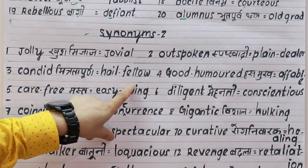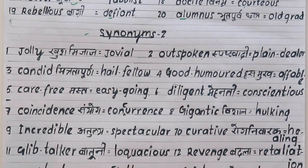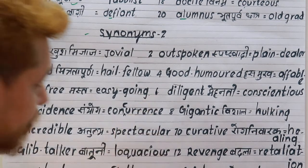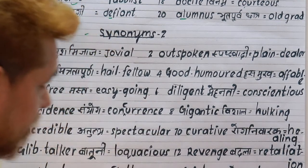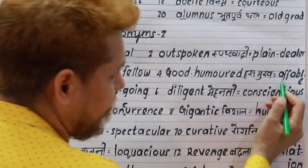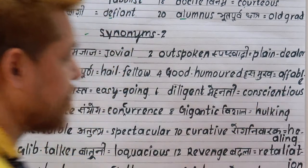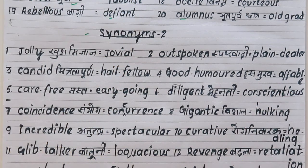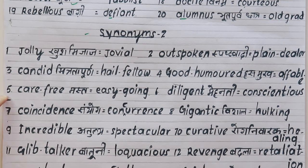Third word is 'candid', meaning friendly and open. The synonym is 'hail fellow'. For example: he is a candid person, he is a hail fellow. Fourth word is 'affable', meaning good-humored, funny, or humorous — a person who loves fun.